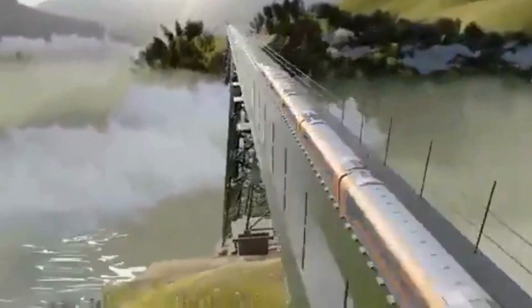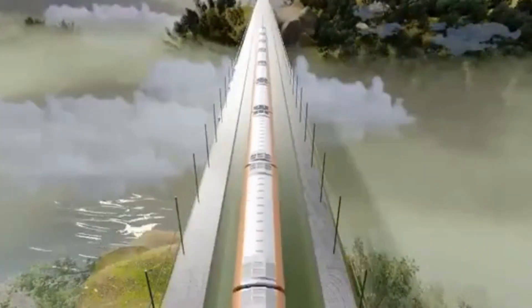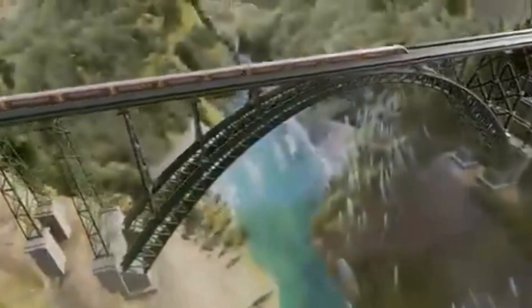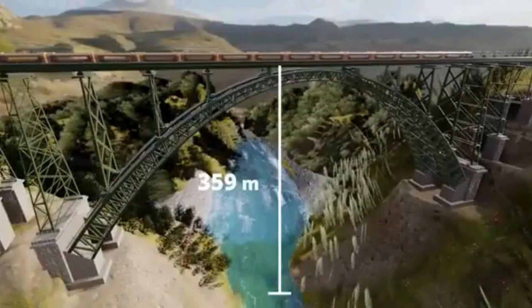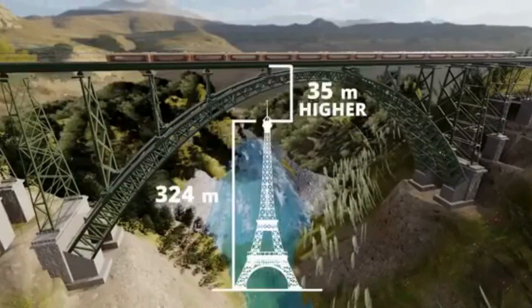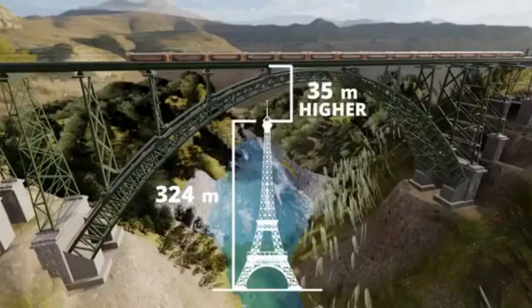All this sophisticated engineering, planning and execution are the reason why the Chenab Bridge became the tallest rail bridge in the world. Its height is 359 meters above the Chenab River, 35 meters taller than the Eiffel Tower.